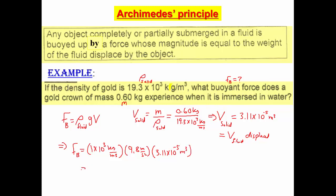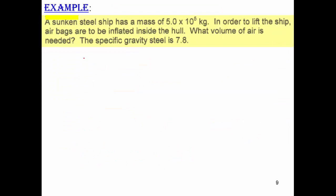Carrying out the calculation, the buoyant force comes out to be 0.305 Newton, because cubic meters cancel and you are left with kilogram meter per second squared, which is the definition of Newton.